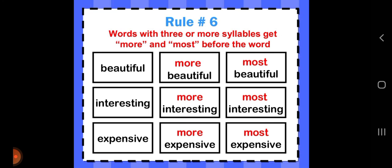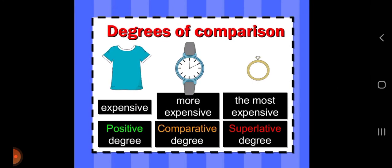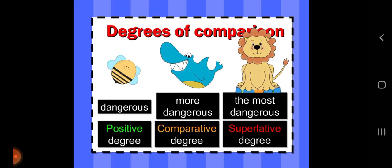Words with three or more syllables get 'more' and 'most' before the word. For example, 'beautiful' — we do not write 'beautifuler' or 'beautifullest'; we write 'more beautiful' and 'most beautiful.' Interesting: more interesting, most interesting. Expensive (three syllables): more expensive, most expensive. Dangerous: more dangerous, the most dangerous.